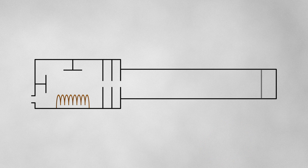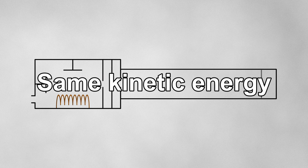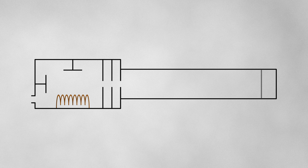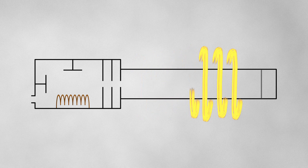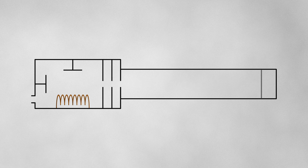Another way the cations can be sorted is by using a time of flight mass analyzer. Here, the cations are accelerated in the same way as before until they all have the same kinetic energy. We then get ion drift, where the cations drift through a region known as the ion drift chamber or flight tube until they reach the detector. Since all the cations have the same kinetic energy, their velocities will depend on their masses — lighter cations will be faster and heavier cations will be slower. Different cations hit the detector one by one, so we can determine the mass of the cation by the time it took to traverse the ion drift chamber.